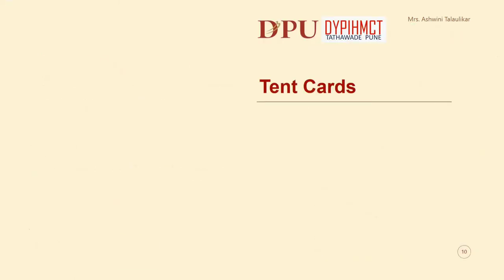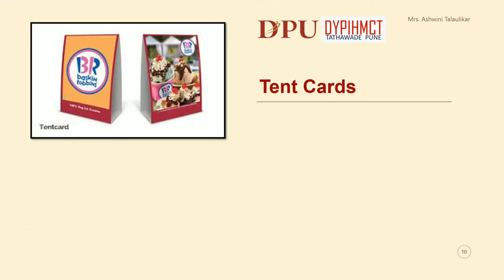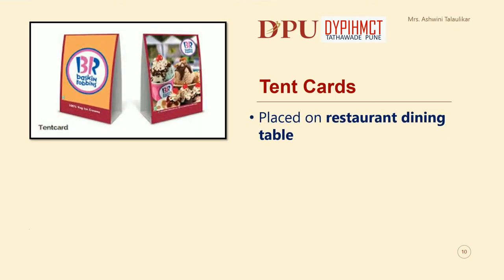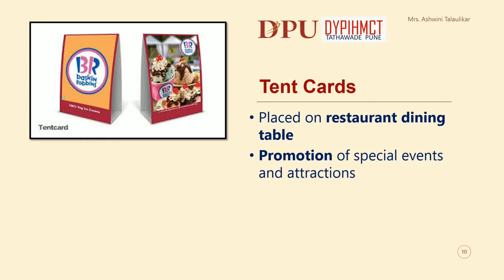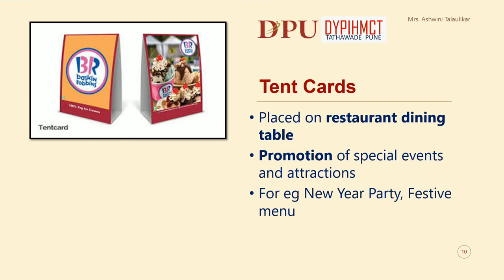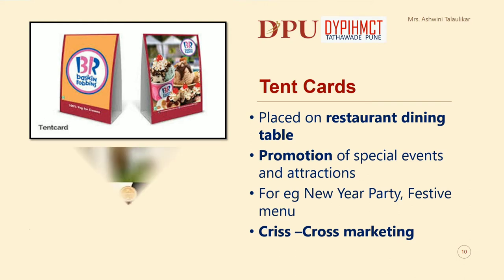The next type of Menu Merchandising Tool is the Tent Card. They are placed on restaurant dining tables and are used for promotion of special events and attractions — for example, New Year Party, Festive Venues. They are also a form of cross-marketing.